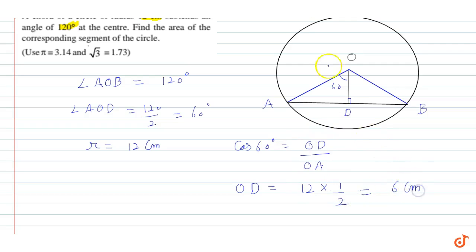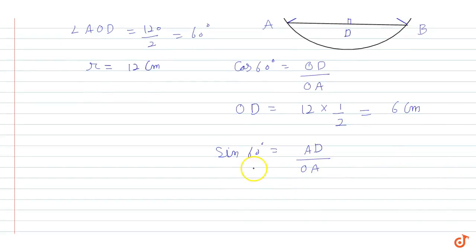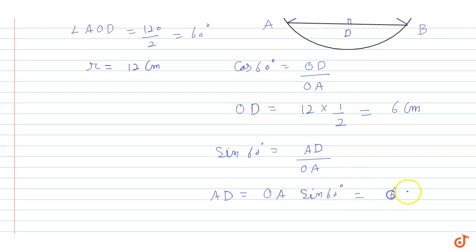So OD's length is 6 cm. Now for AD's length: OA is 12 and sin 60° is √3/2. So AD = OA × sin 60° = 12 × (√3/2), which gives a value equal to 6√3 cm.